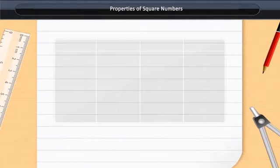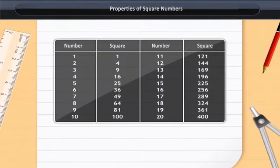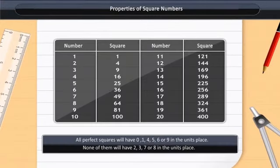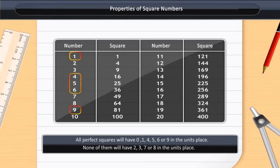Properties of Square Numbers: All perfect squares will have 0, 1, 4, 5, 6, or 9 in the units place. None of them will have 2, 3, 7, or 8 in the units place.